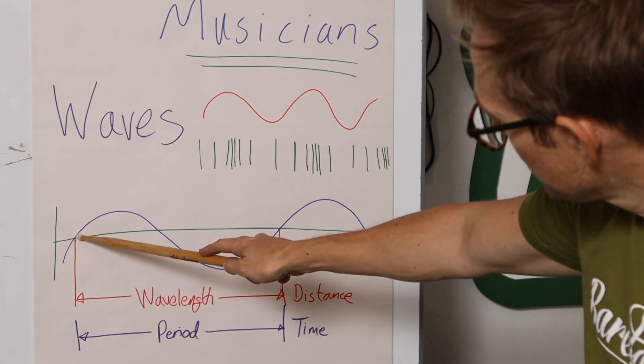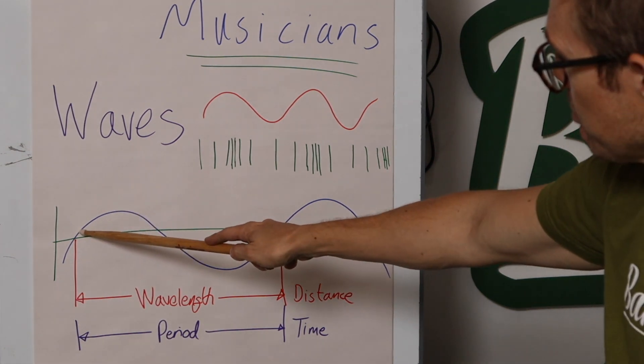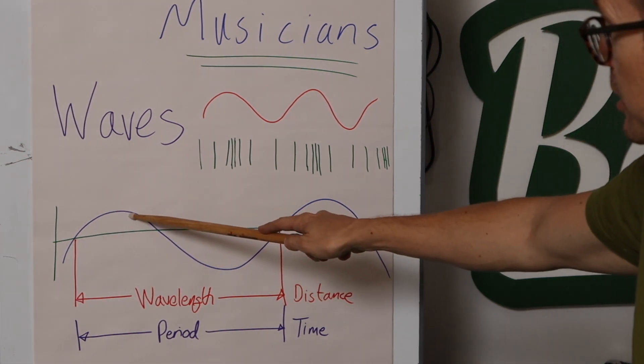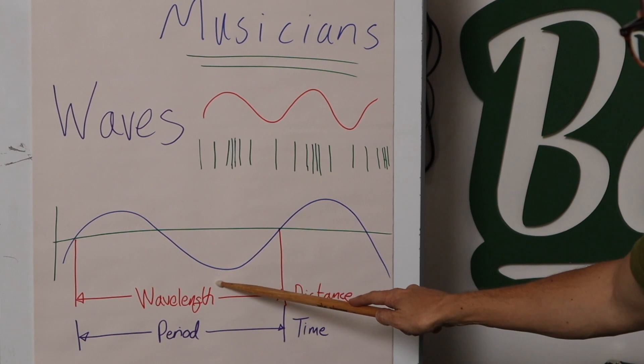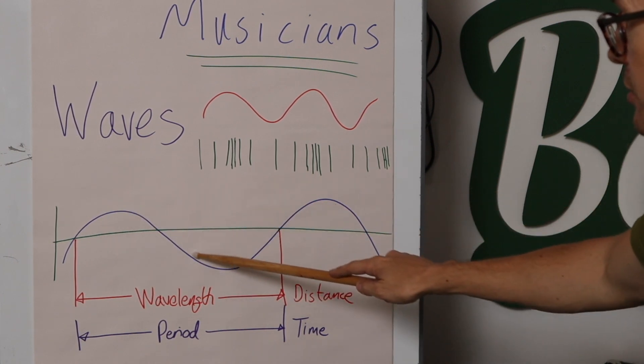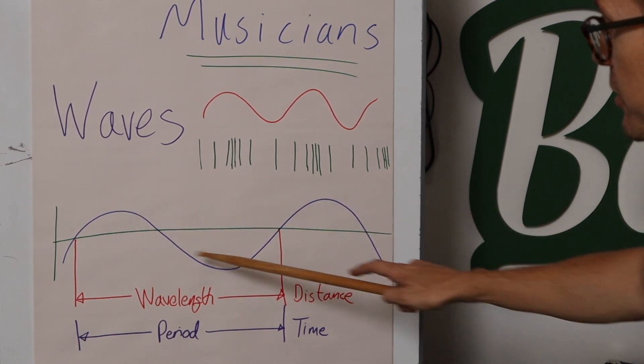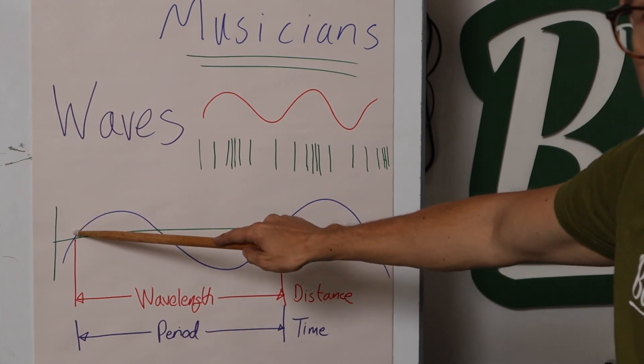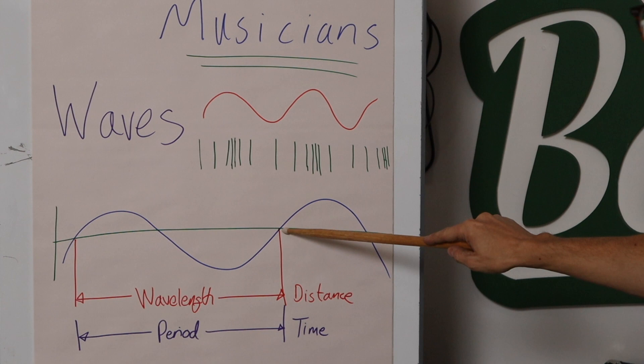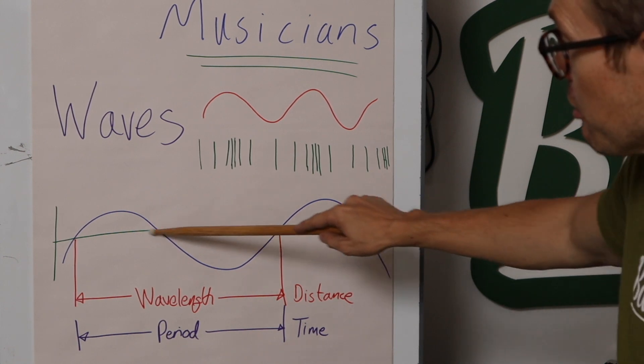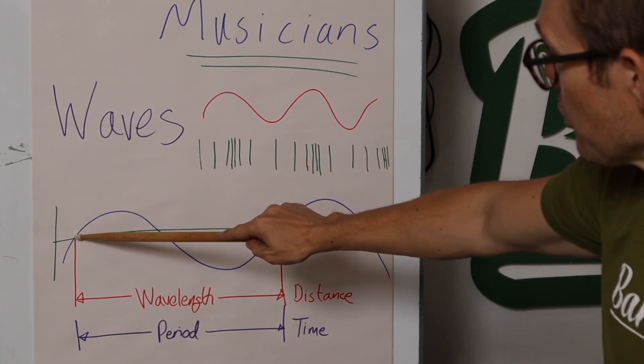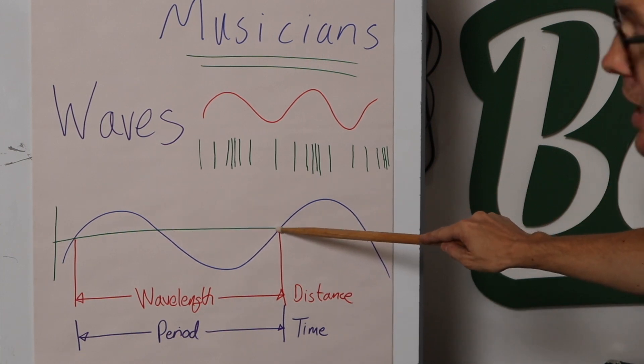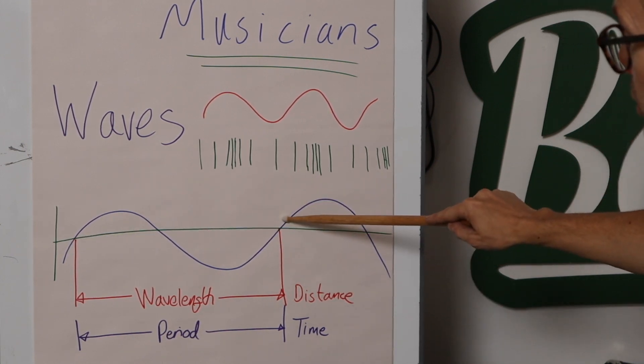So basically, the intensity increases, comes back to zero, the intensity decreases or reverses. You could look at it two different ways. But basically, up, down. And when the wave crosses the x-axis, that's at zero again. So we've gone up and it's downwards and it's coming back up again. That is one full wave cycle.